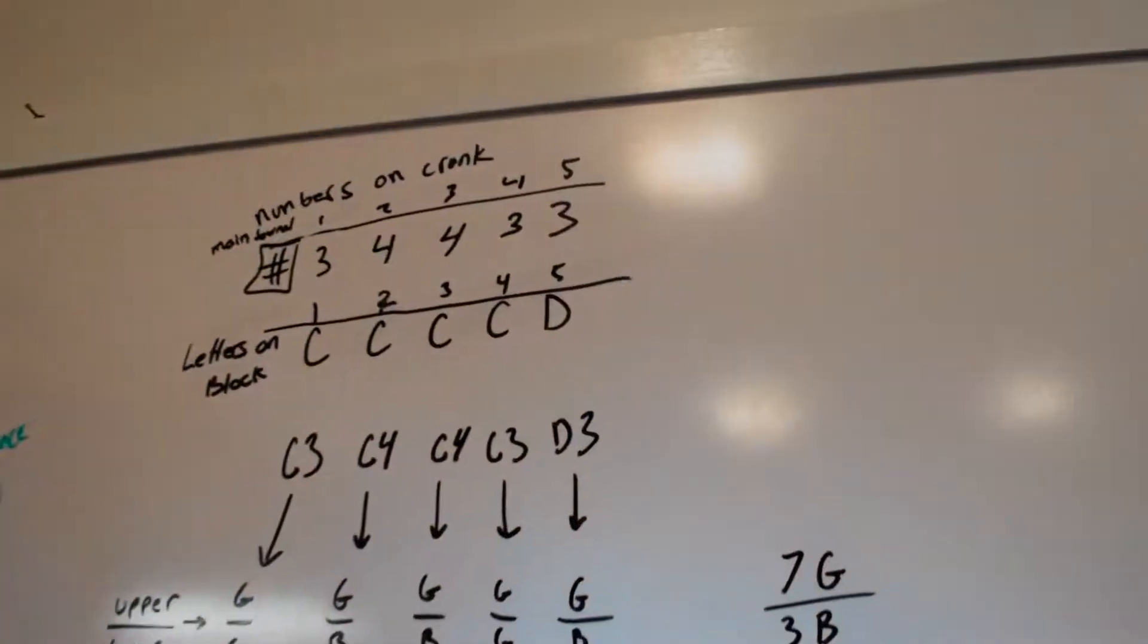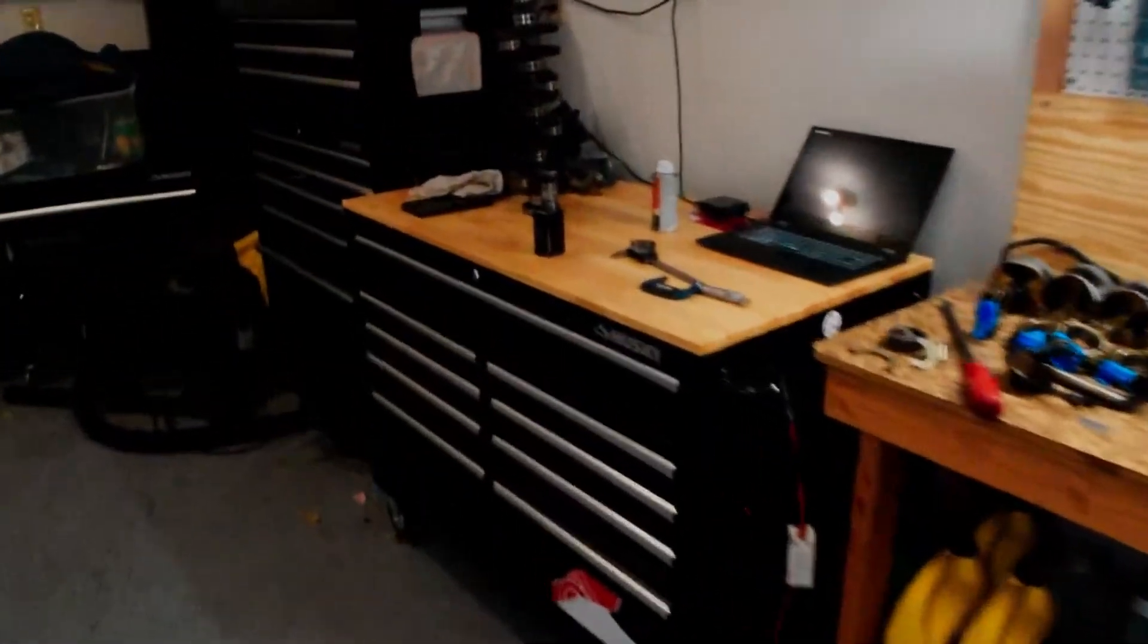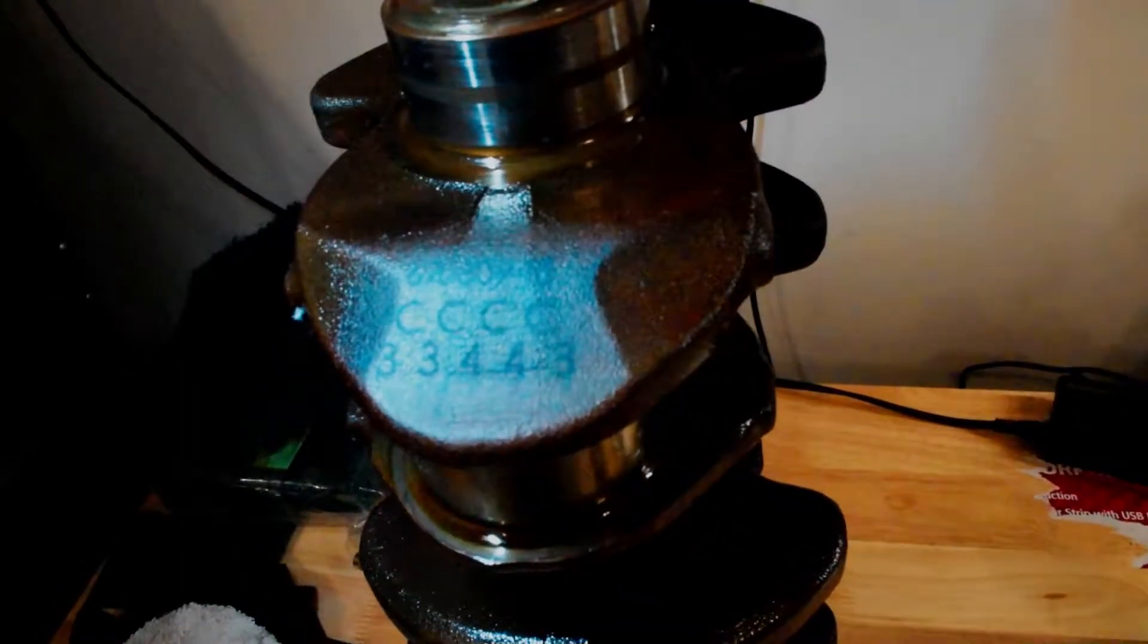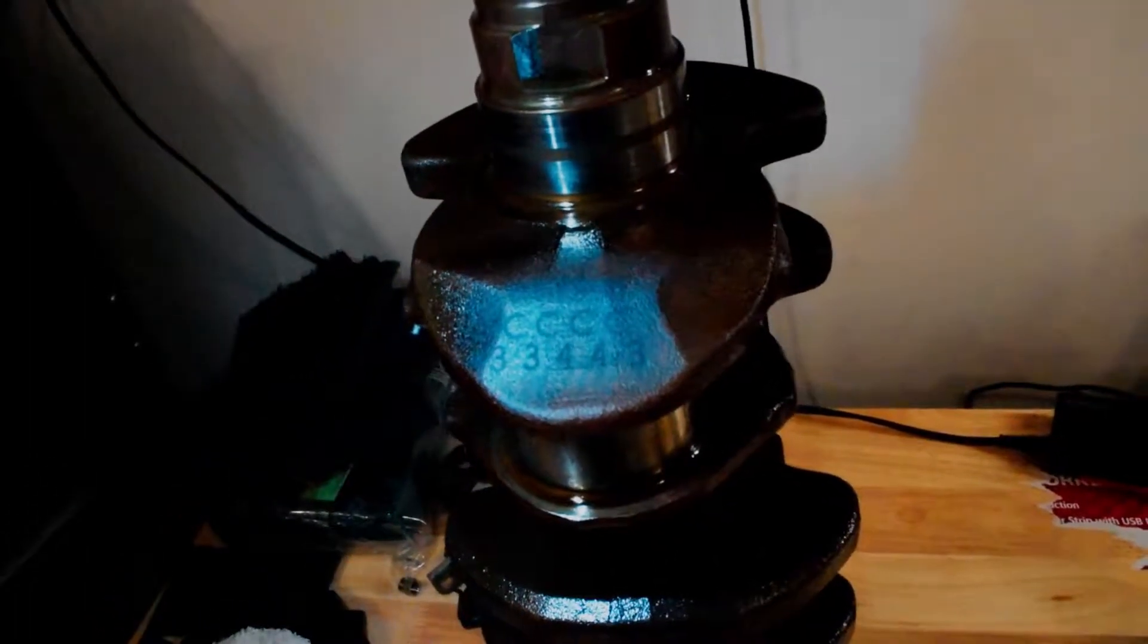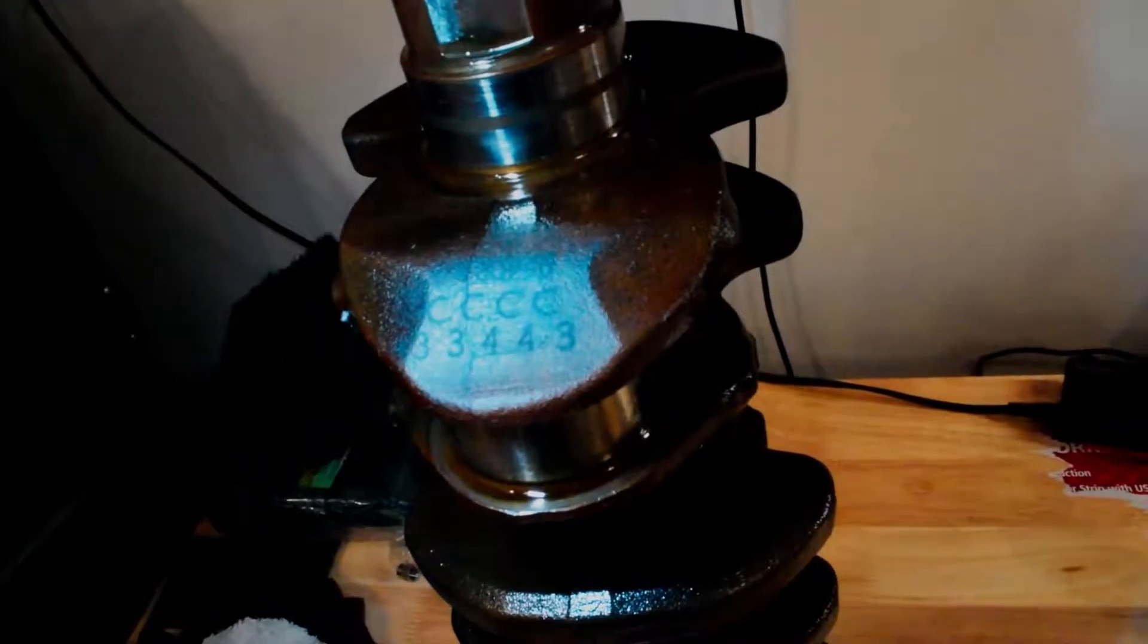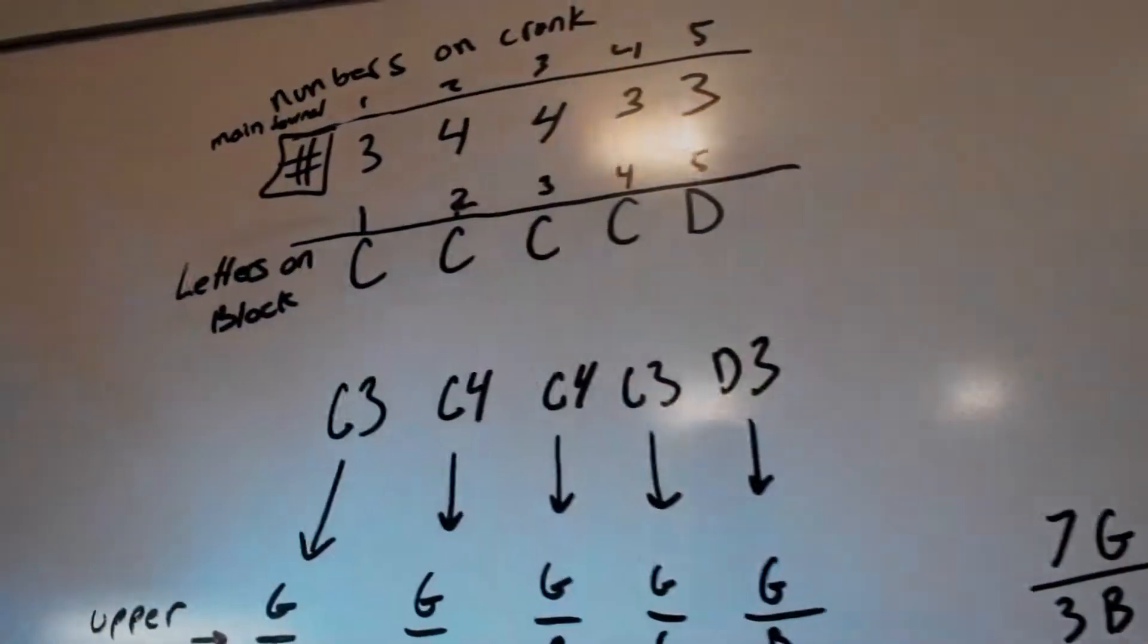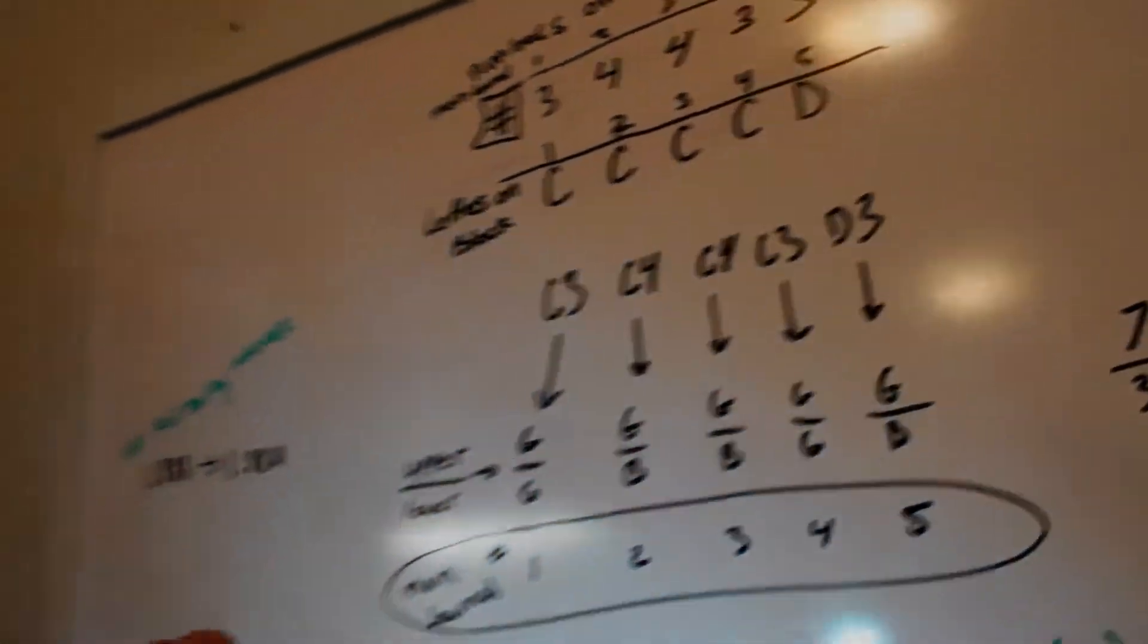So in reality it's C C C C D. That corresponds to these guys C C C C and D. Then there's also numbers on the crank, and those are 3 4 4 3 3. I'll see if I can get you guys a good angle on the crank over here. See that? 3 3 4 4 3. On the crank, the numbers actually go from journals 5 to 1. So number 3 corresponds to 5, the next 3 corresponds to journal 4, 4 corresponds to 3, other 4 corresponds to 2, 3 corresponds to 1. So what you do is match that up right here, and that gives you these codes here. You've got C3, C4, C4, C3, and D3.